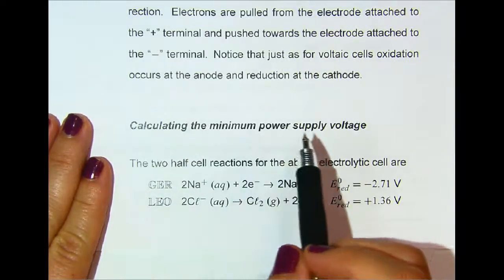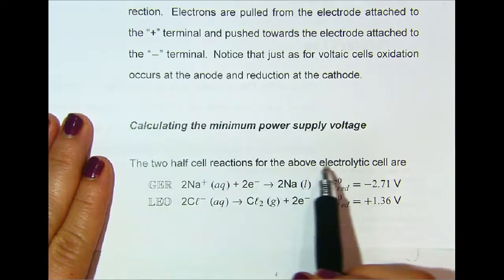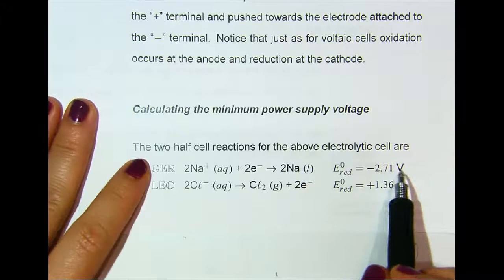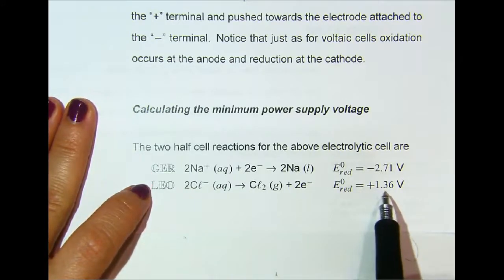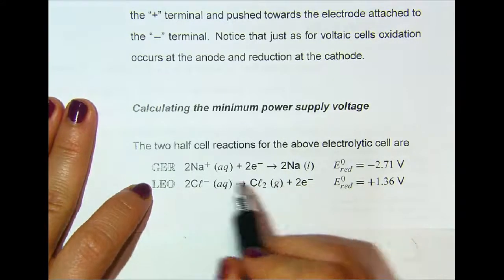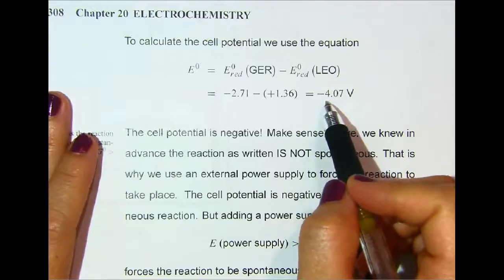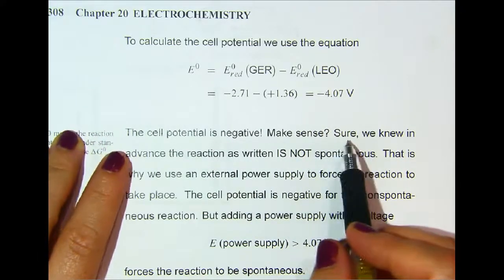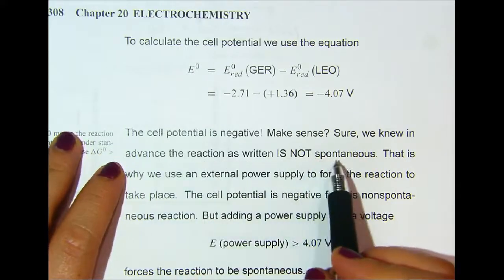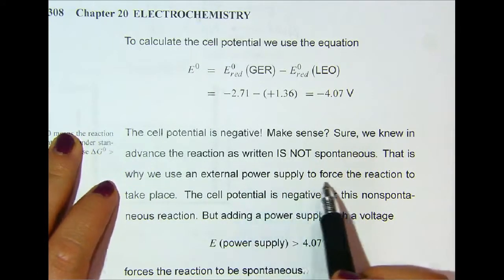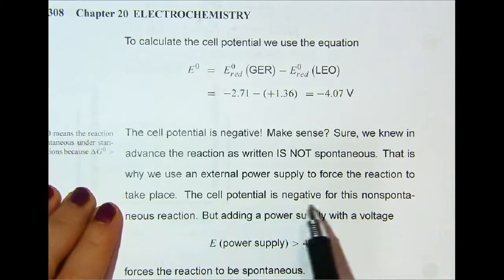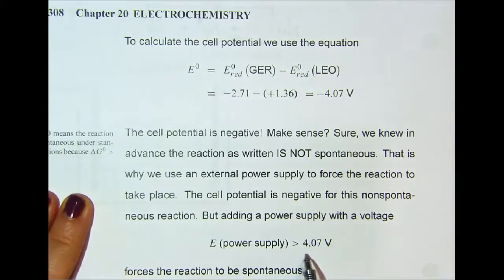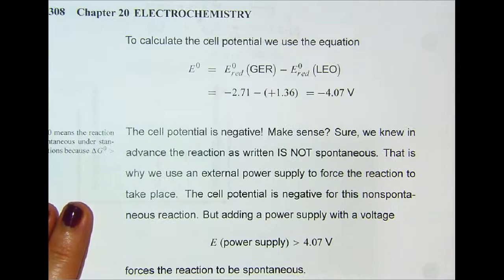Calculating the minimum power supply voltage: the two half-cell reactions for this electrolytic cell are — for sodium, the reduction potential is −2.71 V, and for chlorine, the reduction potential is +1.36 V. If we do E_cell = E_Ger − E_Leo, we get −4.07 volts. The cell potential is negative, which makes sense — we knew in advance the reaction as written is not spontaneous. That is why we use an external power supply to force the reaction to take place. Adding a power supply with a voltage greater than 4.07 volts forces the reaction to be spontaneous.